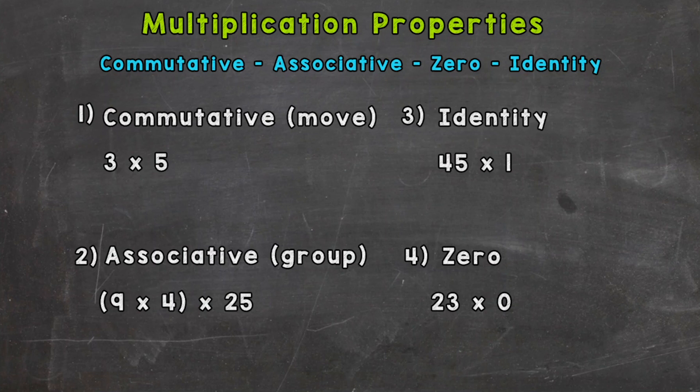For the commutative property, you need to think move. Our example problem: 3 times 5 gives us a product or answer of 15. Commutative means that we can move these factors—the factors are the numbers that we multiplied together—we can move them and still get the same answer. So 3 times 5 equals 15, and 5 times 3 also equals 15. Commutative, think move.